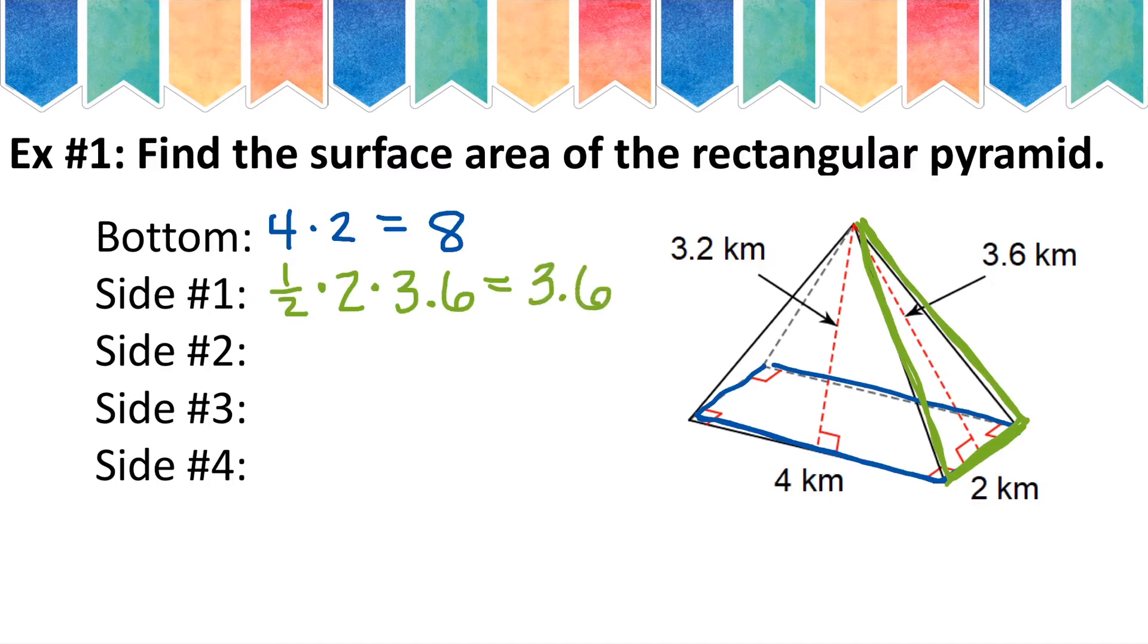Now the cool thing about a rectangular pyramid is because the bottom is a rectangle, if this side is 2, that means this side also has to be 2. So these two faces of the pyramid have to just be the same. So side number 1 and side number 2 are going to be the same.